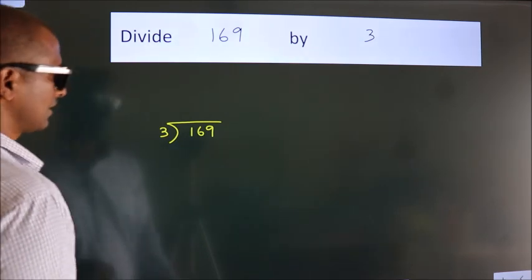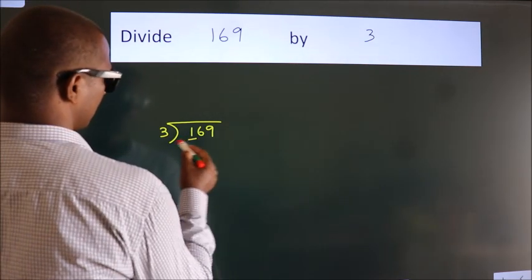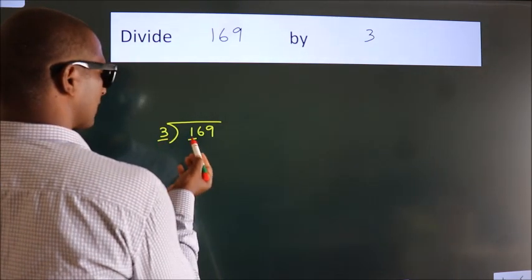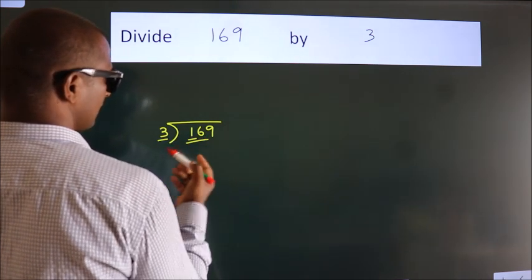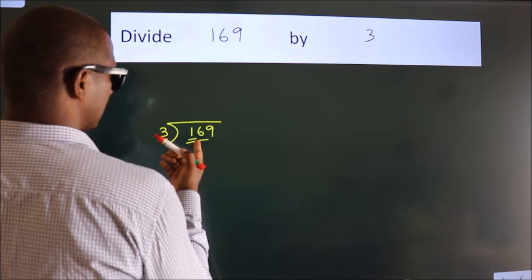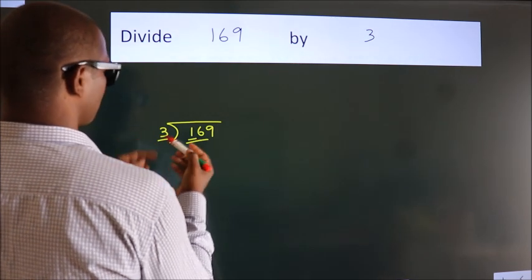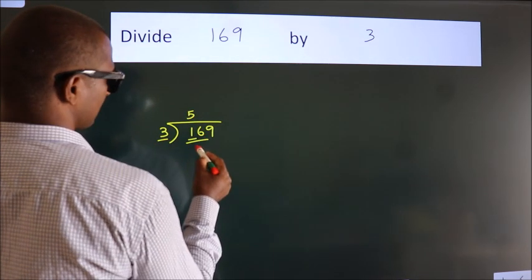Next, here we have 1, here 3. 1 smaller than 3. So we should take 2 numbers, 16. A number close to 16 in 3 table is 3, 5, 15.